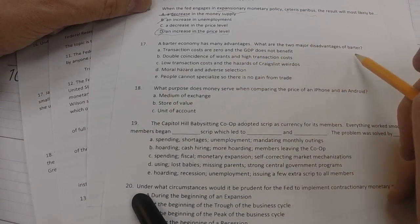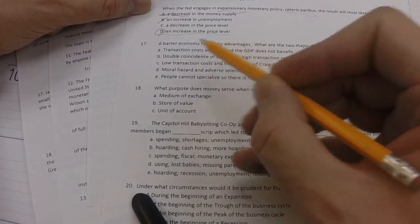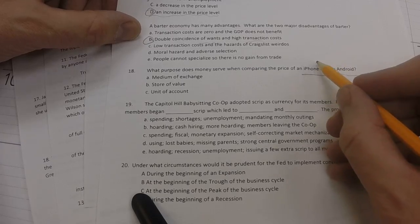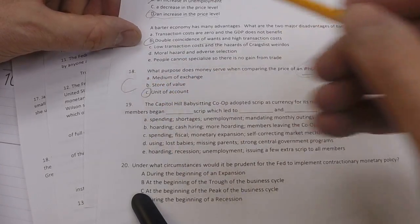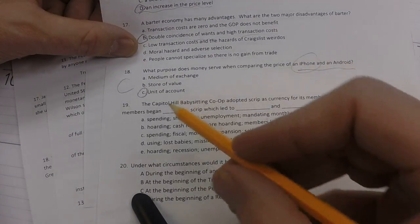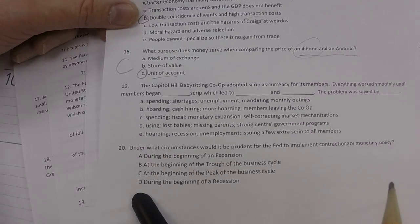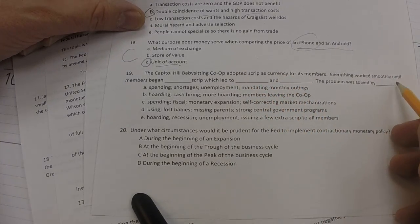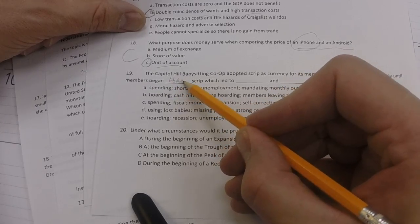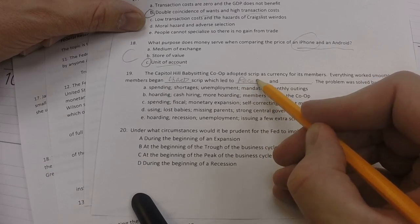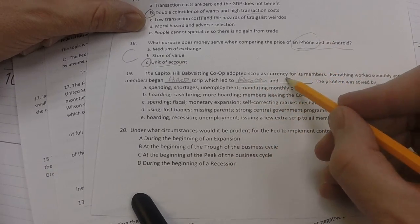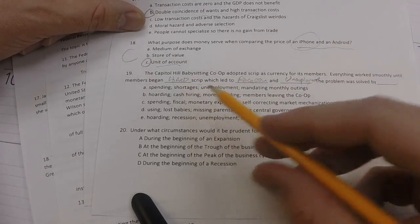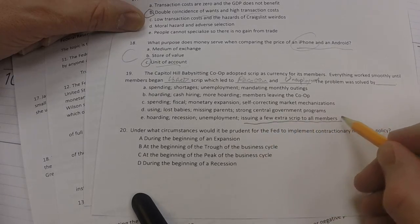A barter economy has many advantages. What are two major disadvantages of barter? The double coincidence of wants and high transaction costs is the answer. Number 18. What purpose does money serve when comparing the price of an iPhone and an Android? In that particular case, it's a way of thinking about the unit of account, the value of an iPhone versus the value of an Android using money as a way of measuring value. And then, question 19. The Capitol Hill babysitting co-op adopted Scrip as currency for its members. Everything worked smoothly until members began to hoard Scrip. And when they started to hoard the Scrip, that led to a recession. And it also led to unemployment because people that were trying to get business, trying to get babysitting gigs, couldn't because people were hoarding their Scrip. The problem was solved by simply issuing a few extra Scrip to all members. Answer E.